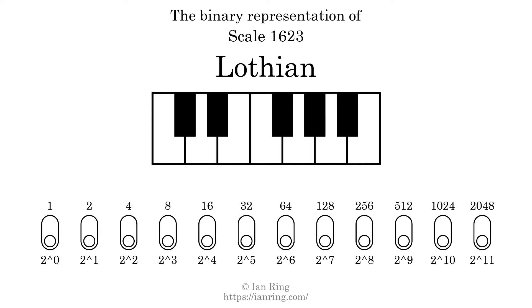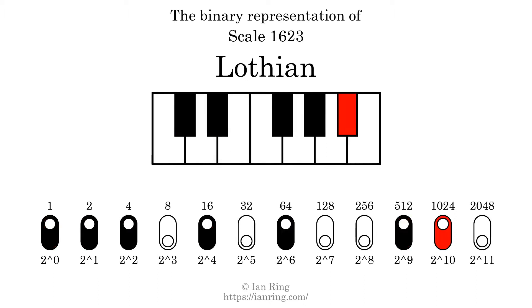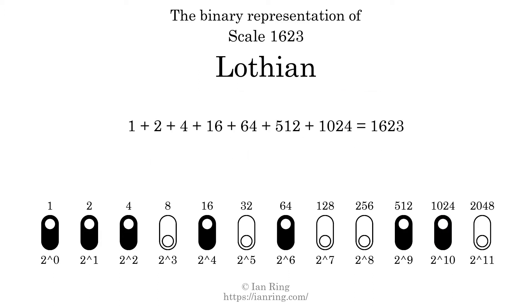The binary representation of this scale is determined by mapping tones of the scale to binary digits. Each binary digit represents a power of 2. To get the scale number, we add the powers of 2 together. The powers of 2 that are present in the scale, all added together, equals 1623.